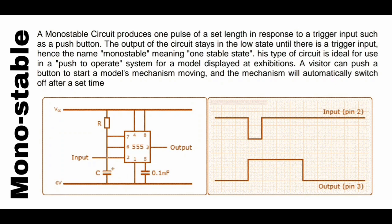In this circuit diagram you can see there is one R in ohms, one capacitor, one noise-filtering capacitor, and the output, 0V and VCC. Looking at the waveform: if you give a trigger input, after the set time the output will automatically go low and turn off. You can see this in the output pin 3 waveform diagram.